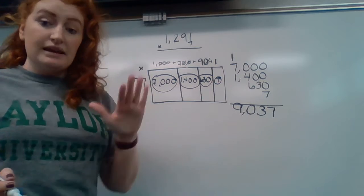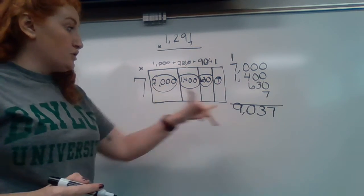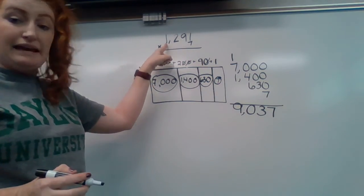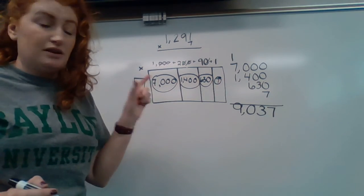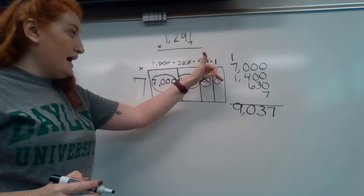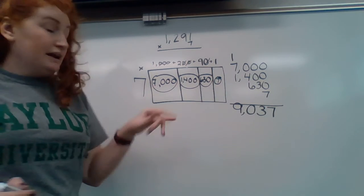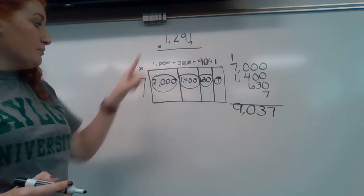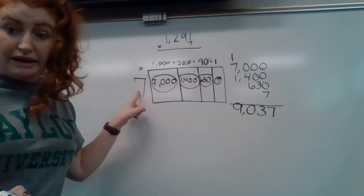So things that are important to remember: step one, you can draw your box. Step two, take your number and put it into expanded form. That's what each box is going to have right here. Step three, put your other number on the side, because we are multiplying digits by one.